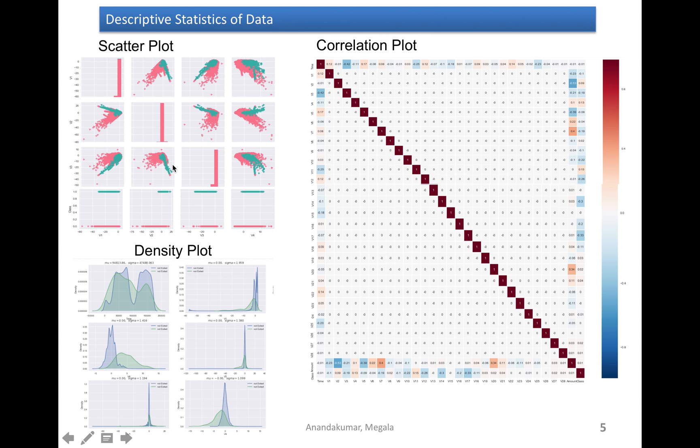This correlation plot shows that there is no significant correlation among the independent variables. When I look at the scatter plot and density plot, I understood that the variables cannot be linearly separable based on the class. That means whether it is a fraud or non-fraud cannot be identified by just looking at one variable. So it clearly indicates that we really need a robust model to identify the fraud.